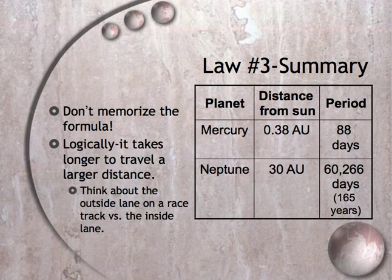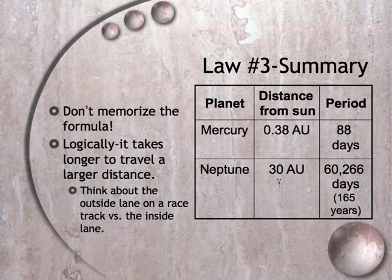Mercury is only 0.38 AU away from the sun, and its period is 88 days. Neptune is about 100 times the distance from the sun, but its period is 60,266 days — not 100 times 88, but 685 times the period. So the period went up a whole lot faster than the distance did.